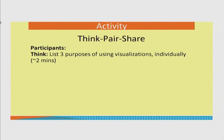Now, assuming all of you have seen these three visualizations, let us start an activity called think-pair-share, which has three stages. The first stage — think — is to be done individually. Every participant should list three purposes of why to use these visualizations. You should take two minutes to write those down, and once you are done the coordinator should let us know.